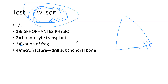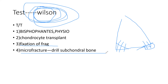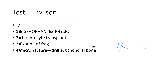Another treatment option is chondrocyte transplant — you take chondrocytes from another surface area, place them here, and then fix them. The other option is microfracture or drilling the subchondral bone, similar to core decompression in the hip joint, which attempts to revascularize that area. Microfracture is essentially the same as core decompression in the hip joint — you hope for revascularization.